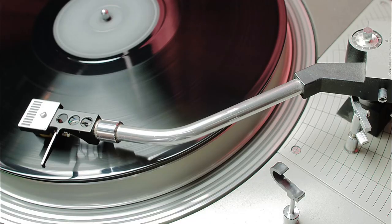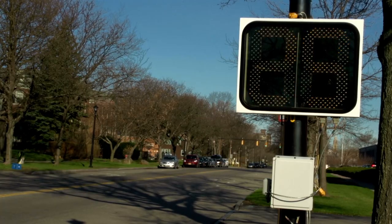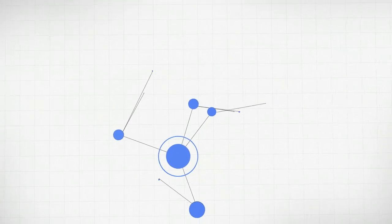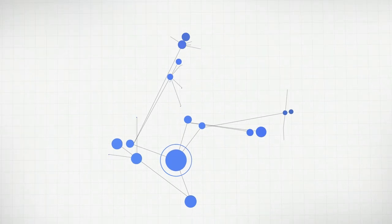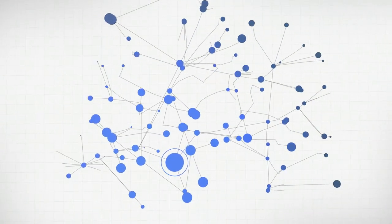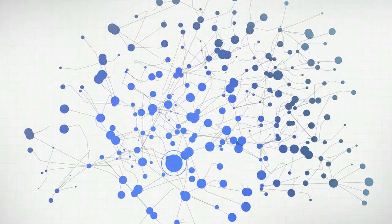For example, think about information. Increasingly, our society is based on information. We know that it can be created, that it can flow and can be transformed. But what is its fundamental nature? Is there really only one kind of information, or can there be different kinds?